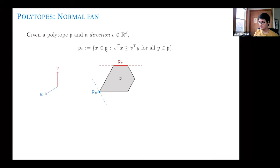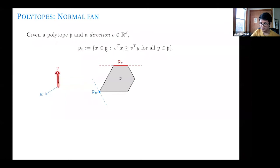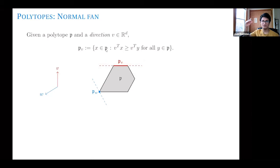The second thing I want to review is deformations, and for that I'll introduce normal fans first. Given a polytope P and any vector in R^d — which we think of as a direction — I use the notation P sub D to denote a certain face of the polytope. My vector D determines a direction, and I consider hyperplanes perpendicular to this vector. As I move the hyperplane in the direction of D, I slice P, and at some point I intersect it for the last time. The intersection of that last hyperplane with P is what I denote P sub D — it is a face of the polytope.